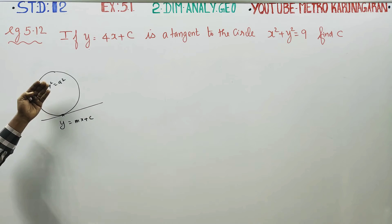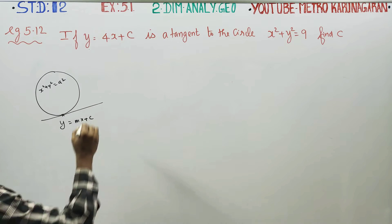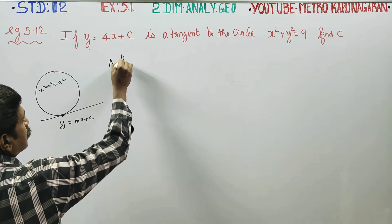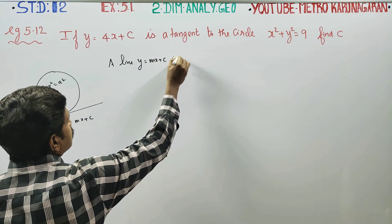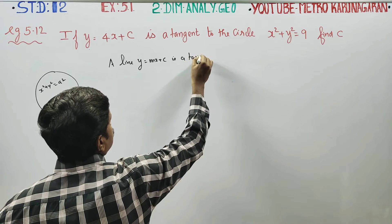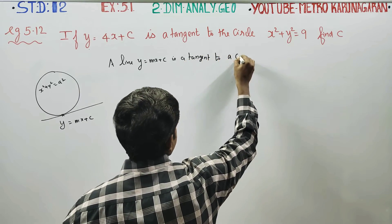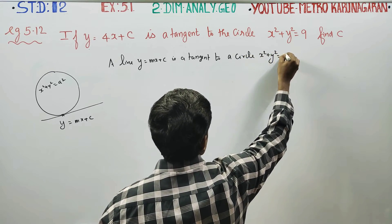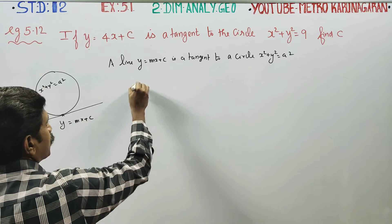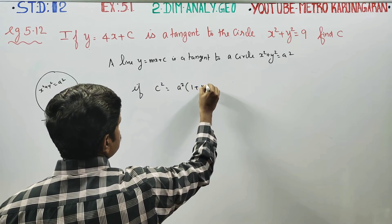If this line is tangent to the circle, it must satisfy a condition. A line y is equal to mx plus c is a tangent to a circle if x square plus y square is equal to a square, if c square is equal to a square times 1 plus m square.